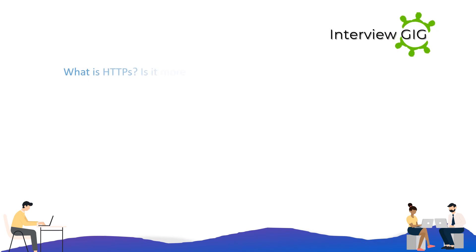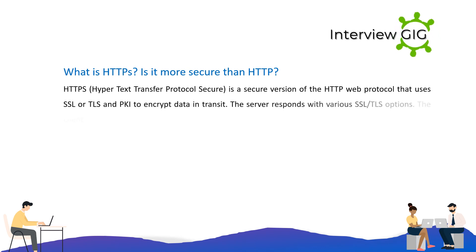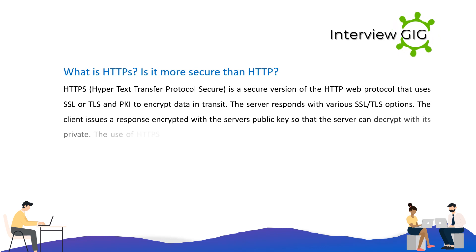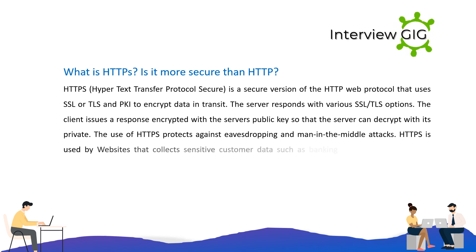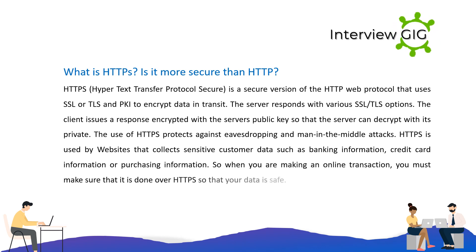What is HTTPS? Is it more secure than HTTP? HTTPS, Hypertext Transfer Protocol Secure, is a secure version of the HTTP web protocol that uses SSL or TLS and PKI to encrypt data in transit. The server responds with various SSL/TLS options. The client issues a response encrypted with the server's public key so that the server can decrypt it with its private key. The use of HTTPS protects against eavesdropping and man-in-the-middle attacks. HTTPS is used by websites that collect sensitive customer data such as banking, credit card, or purchasing information, so you must make sure online transactions are done over HTTPS.